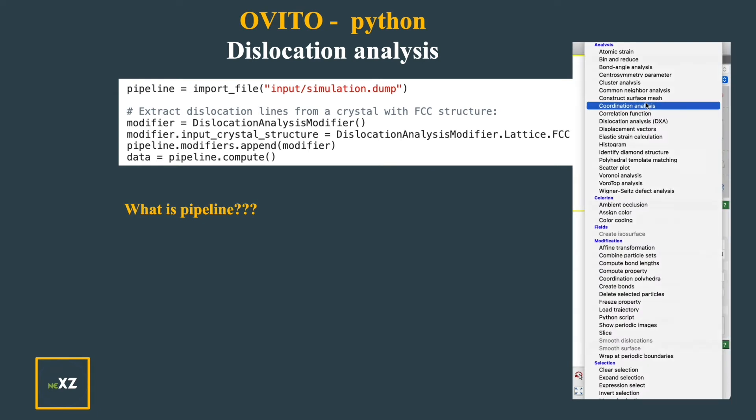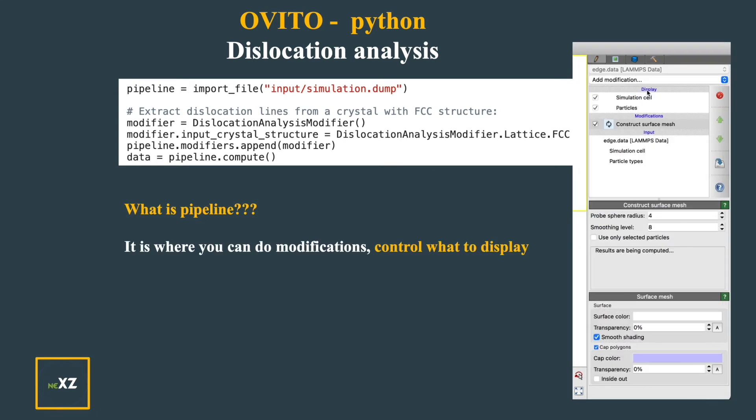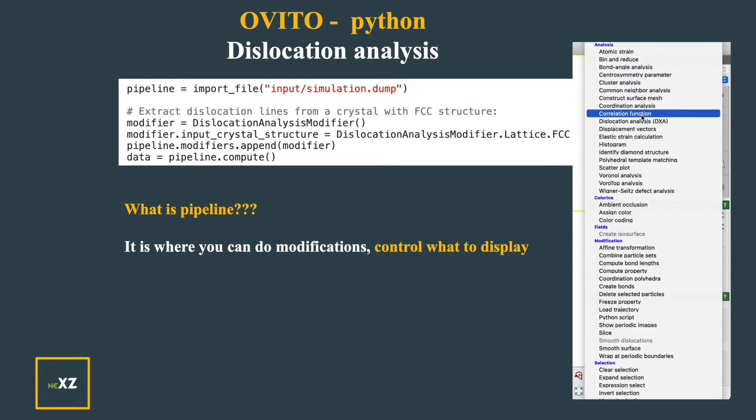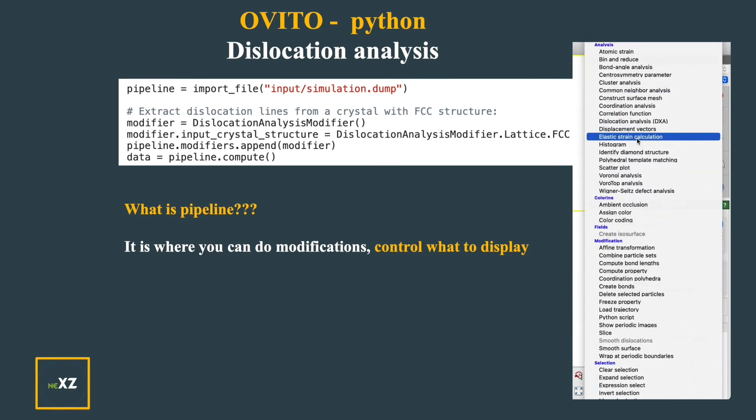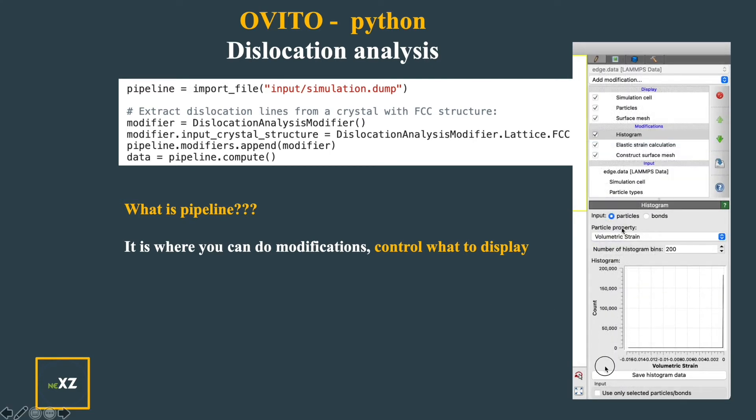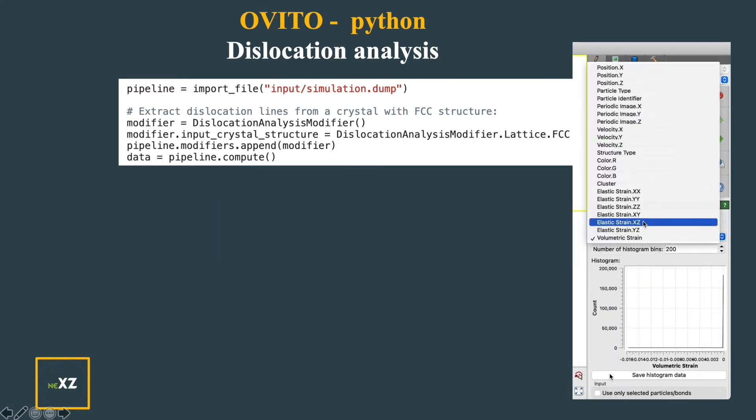So here you can do all the functions where you can add modifiers or modifications. You can control what to display like simulation cell, surface mesh or particles. So this is a pipeline.